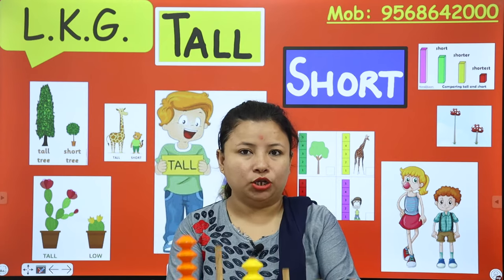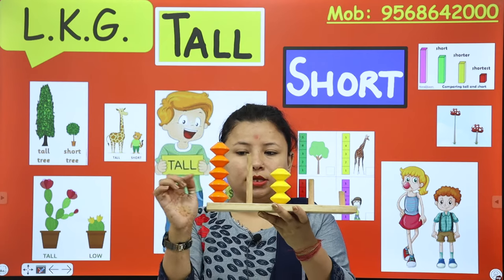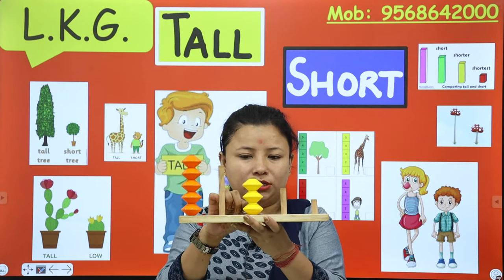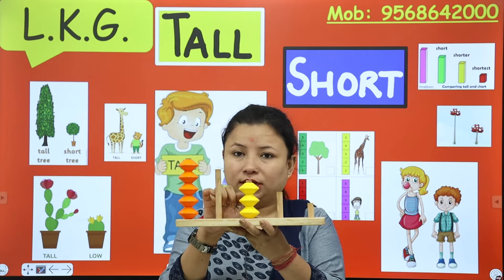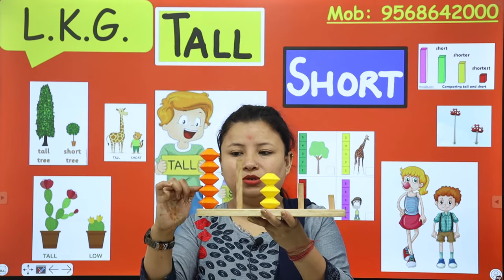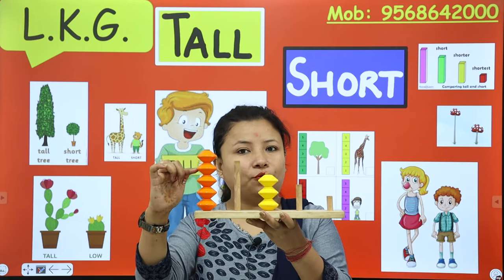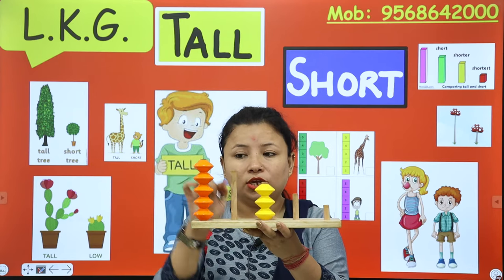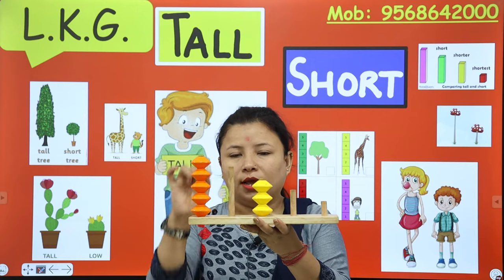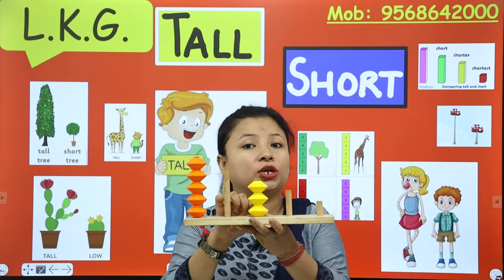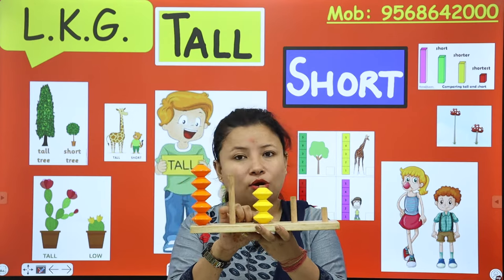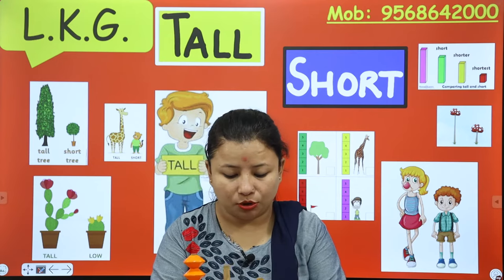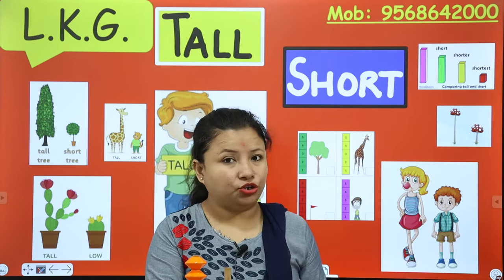I will show you one example. Look here — let's count them: one, two, three. These are three blocks. And here: one, two, three, four, five — these are five blocks. So this block is tall and this block is short. Tall and short is the concept of height.